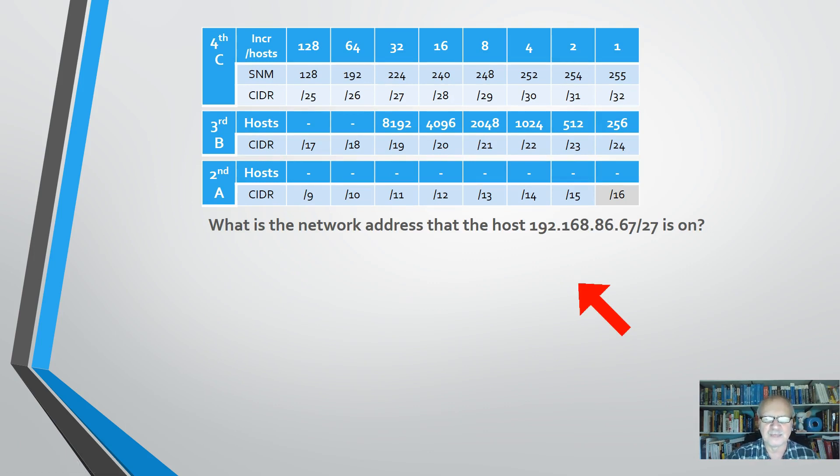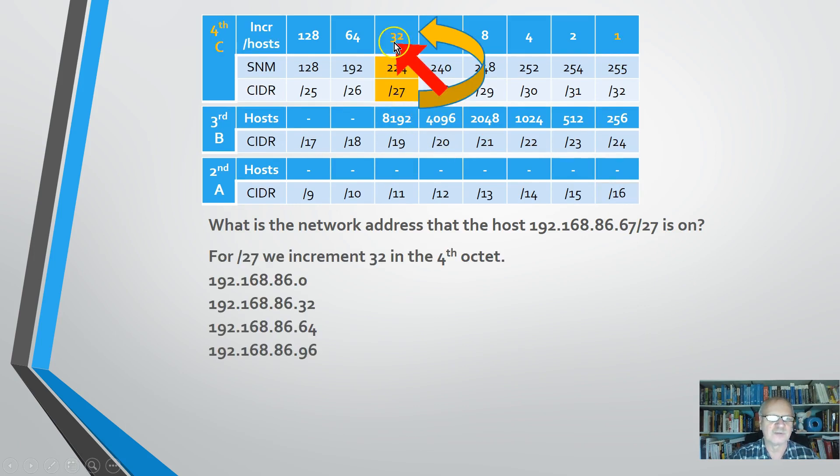192.168.86.67 slash 27. All right. Where are we on our table? We are on the slash 27, right? We're right here. Slash 27. So we know that the increments are 32 because we're here. It's in the fourth octet. Increments are 32 in the fourth octet. So let's just do that until we get close to 67.